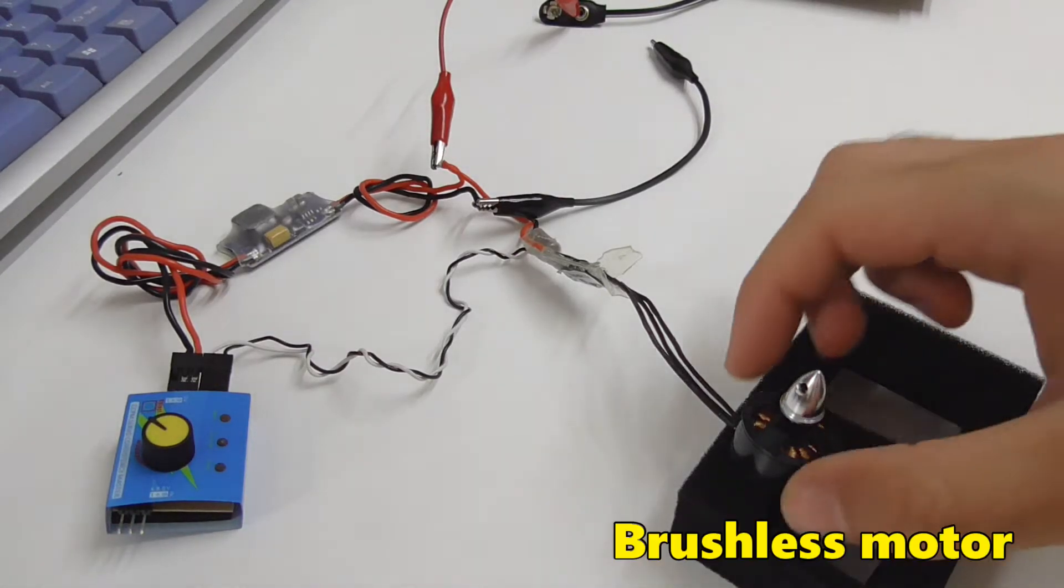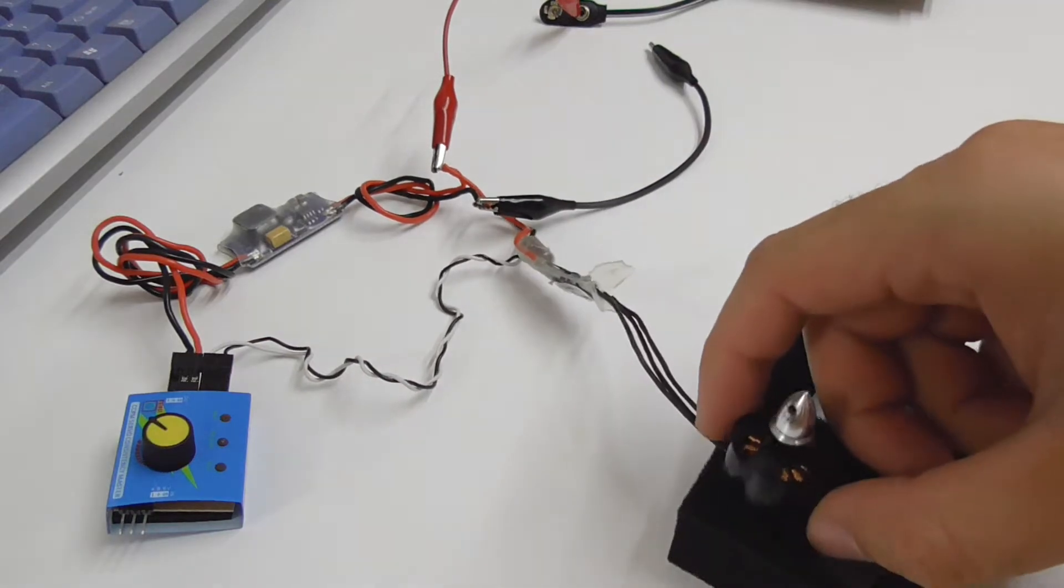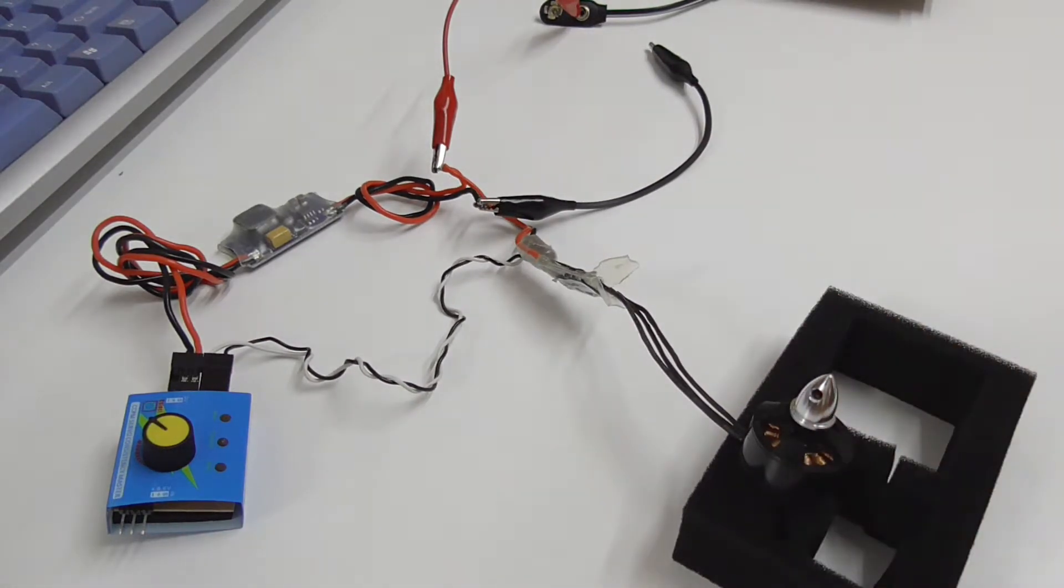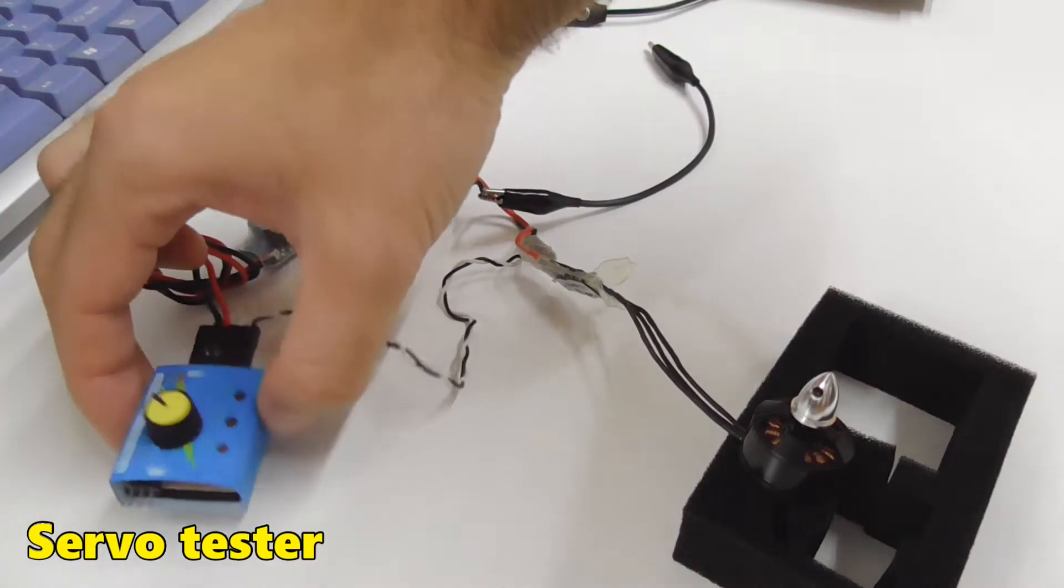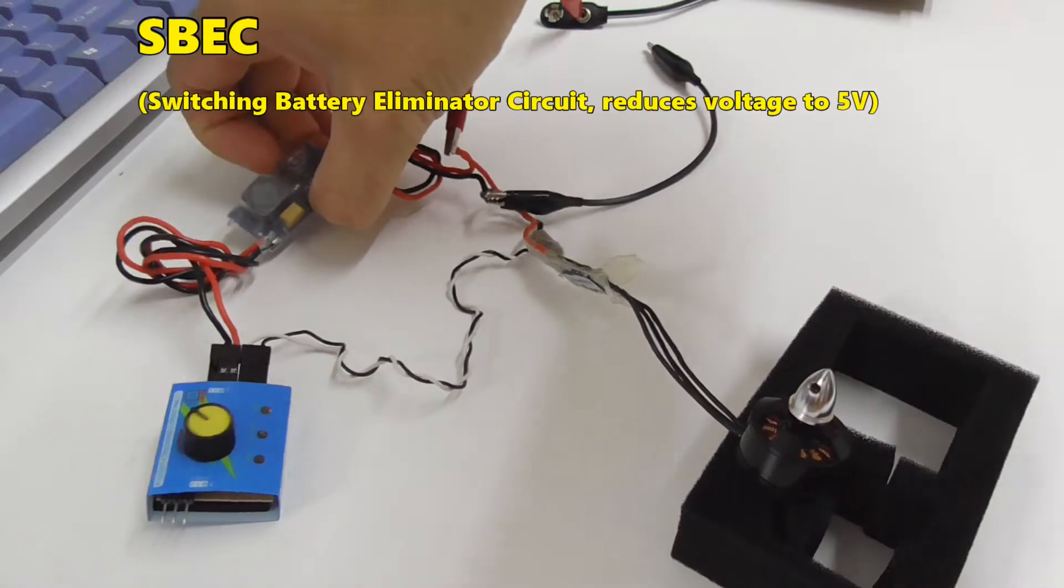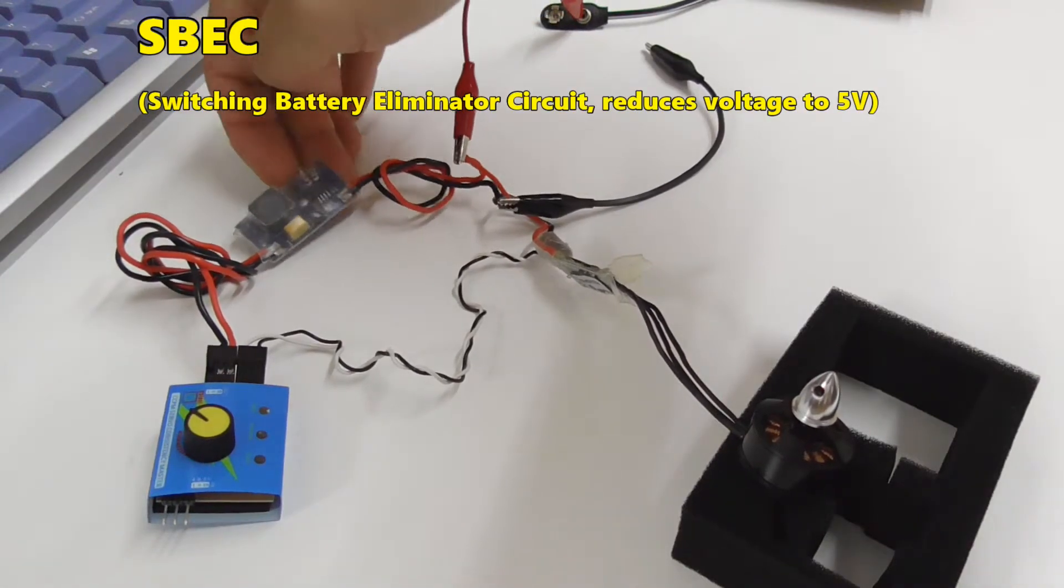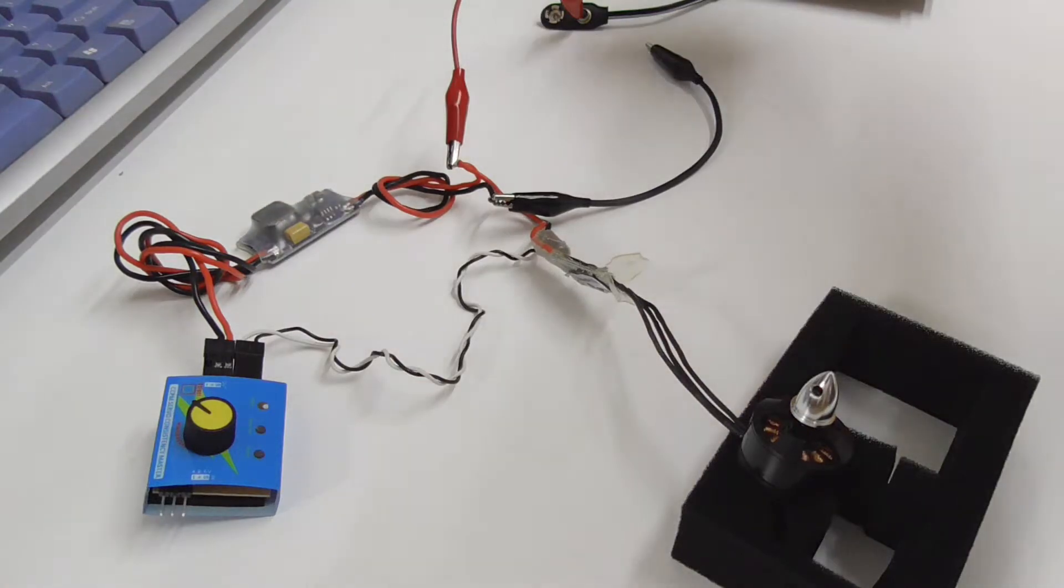How to power a brushless motor which has three wires without a flight controller. To do that we have this servo tester. It has a potentiometer and a battery eliminator circuit, a BEC, that reduces the power. It reduces my six volts DC to five volts for this one.